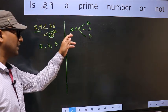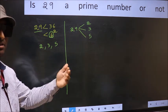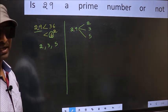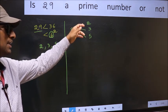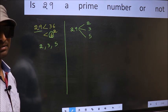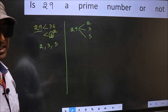Now, if 29 is divisible by any one of these numbers, we say it is not prime. If 29 is not divisible by any of these numbers, we say it is prime. Clear with the method? Let us check the divisibility.